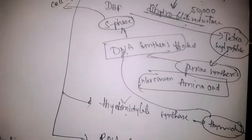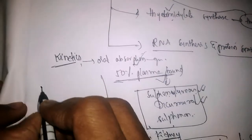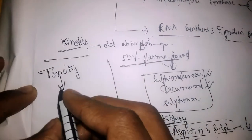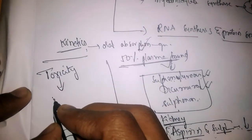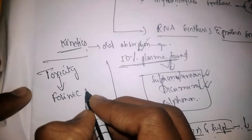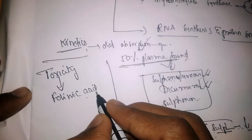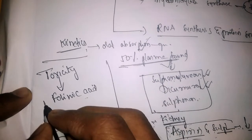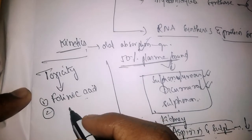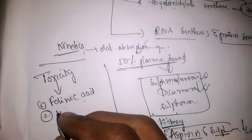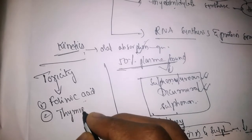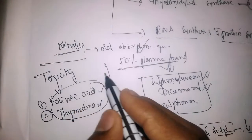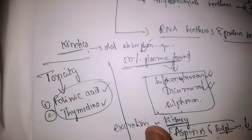Regarding toxicity management: the toxicity of methotrexate can be overcome by two drugs. One is folinic acid, and the other is thymidine. Folinic acid and thymidine are used to overcome the toxicity of methotrexate.